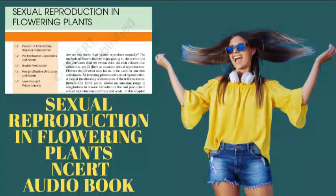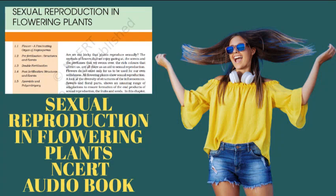The inner wall of the pollen grain is called the intine. It is a thin and continuous layer made up of cellulose and pectin. The cytoplasm of the pollen grain is surrounded by a plasma membrane. When the pollen grain is mature, it contains two cells: the vegetative cell and the generative cell. The vegetative cell is bigger, has abundant food reserve and a large irregularly shaped nucleus. The generative cell is small and floats in the cytoplasm of the vegetative cell — spindle-shaped with dense cytoplasm and a nucleus. In over 60% of angiosperms, pollen grains are shed at this two-cell stage. In the remaining species, the generative cell divides mitotically to give rise to two male gametes before pollen grains are shed — three-cell stage.